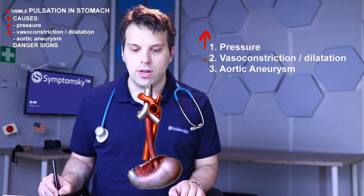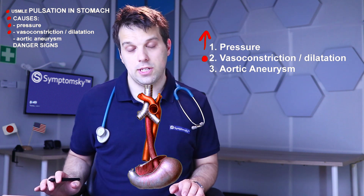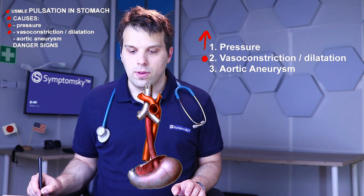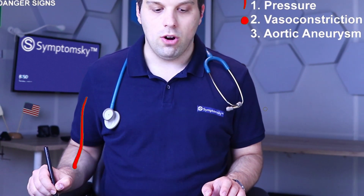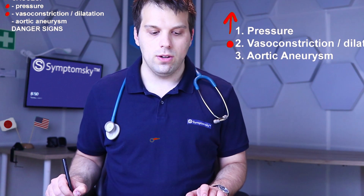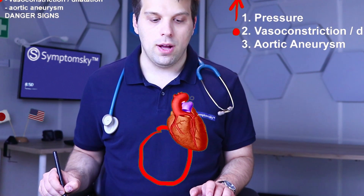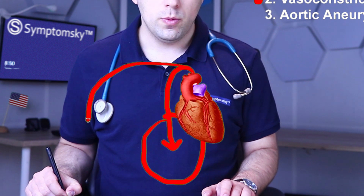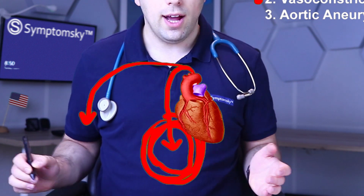Vasoconstriction and dilation of arteries can also cause pulsation in certain regions of the human body. For example, if peripheral arteries such as those in the arms and legs are constricted and central arteries are dilated, as the heart pumps blood into these regions, more blood will rush into this region because the arteries here are dilated.